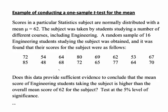So let's look at the step-by-step process then. The first thing is what question are we actually trying to address? Here the question is: does this data provide sufficient evidence to conclude that the mean score of engineering students taking this subject is higher than the overall mean score of 62 for the subject? We're wanting to test this at the 5% level of significance.